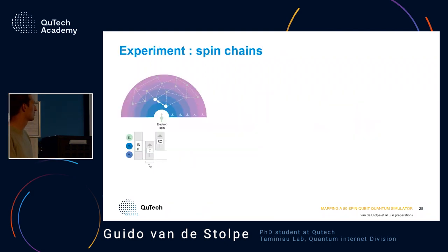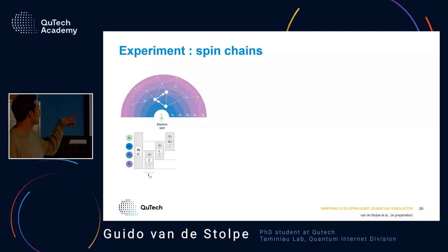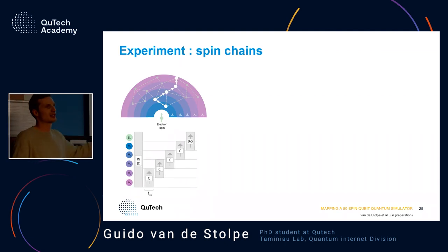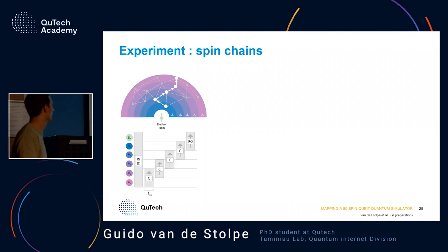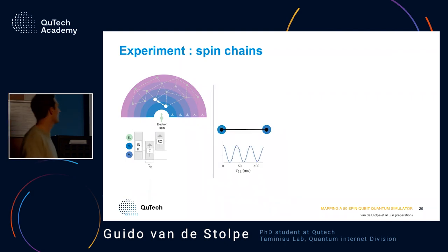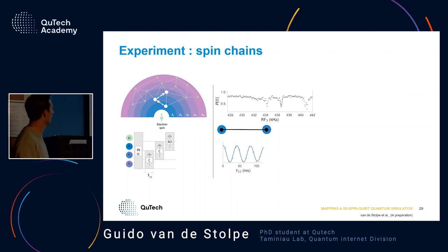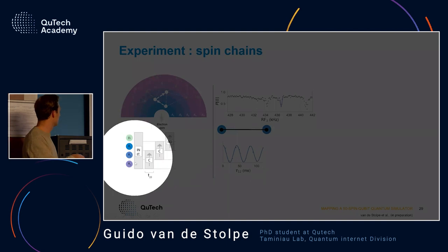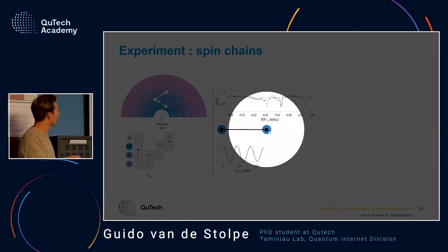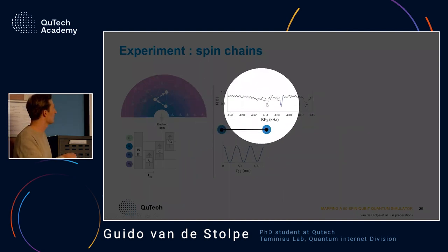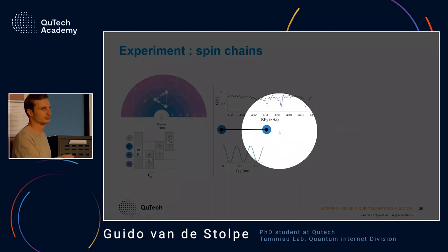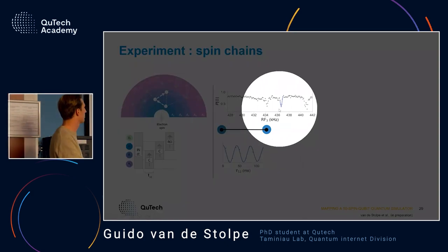In the actual experiment, we walk through different frequency regions and every time add another SEDOR block — at some points we're doing four or five frequencies, really measuring a whole chain of five spins deep into the network. Looking at the data, we first do the SEDOR between A1 and A2, then add a third frequency and sweep it. You see dips corresponding to spins coupled to this spin, as if you're looking from this spin at its local environment.